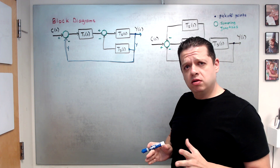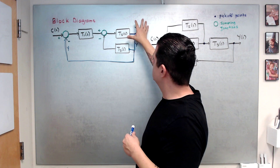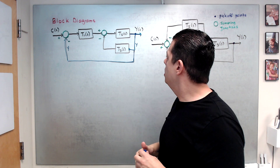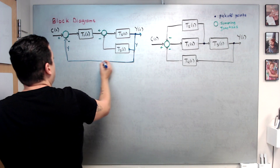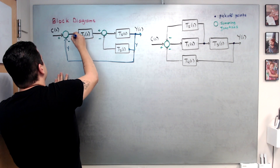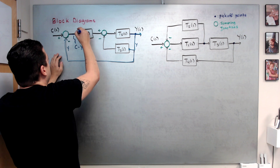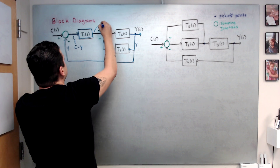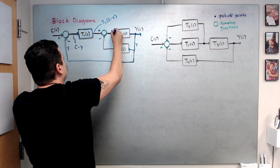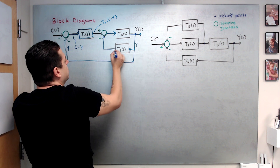I would like to find the closed-loop system transfer function — the transfer function between Y and C. I always start from where it ends and then close the loop, which I will highlight with my blue marker. Starting from Y, this becomes Y; this signal becomes C minus Y. That quantity, C minus Y, is multiplied by transfer function T1. Now I need to know this other signal, which is Y multiplied by T3.